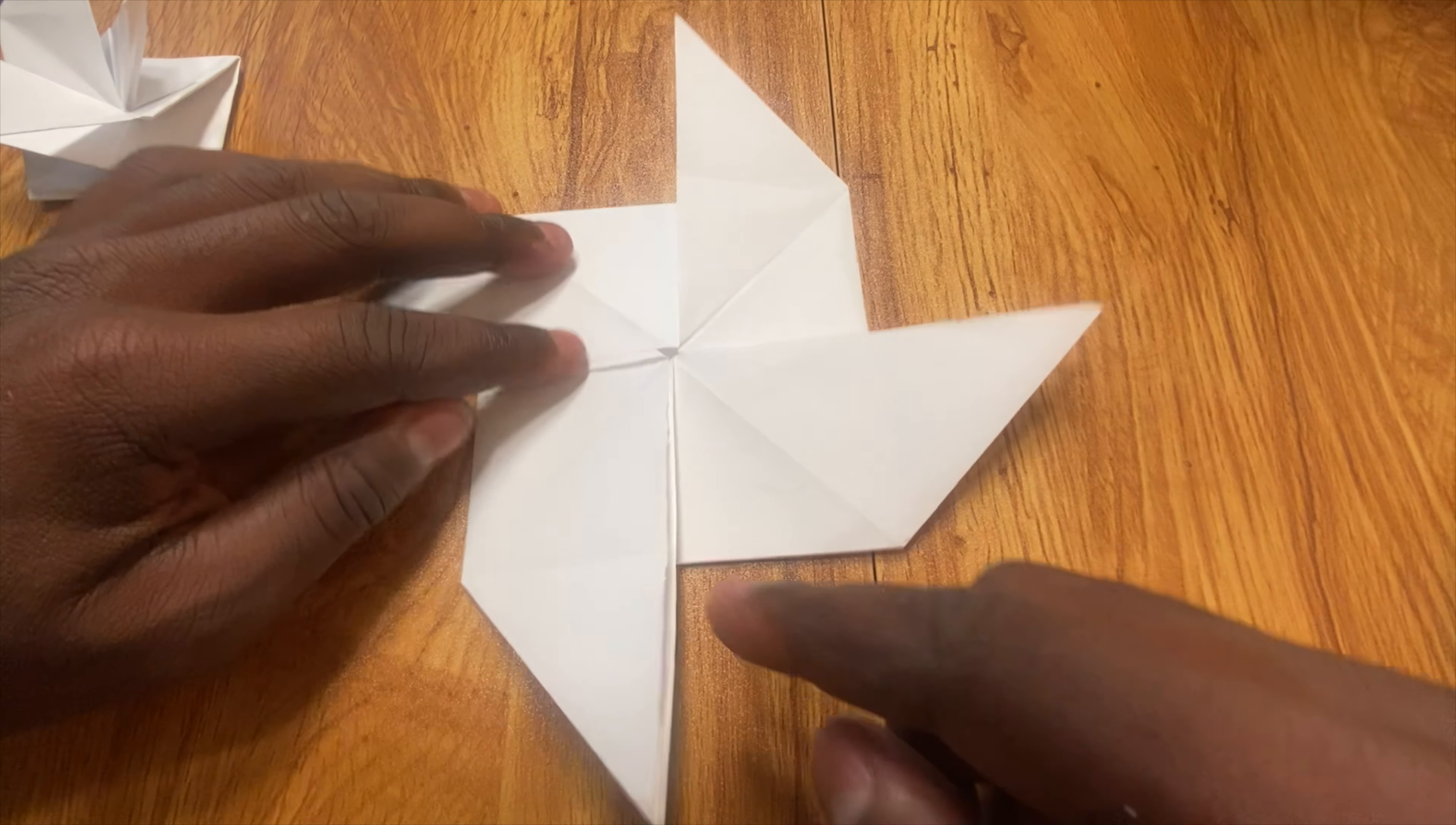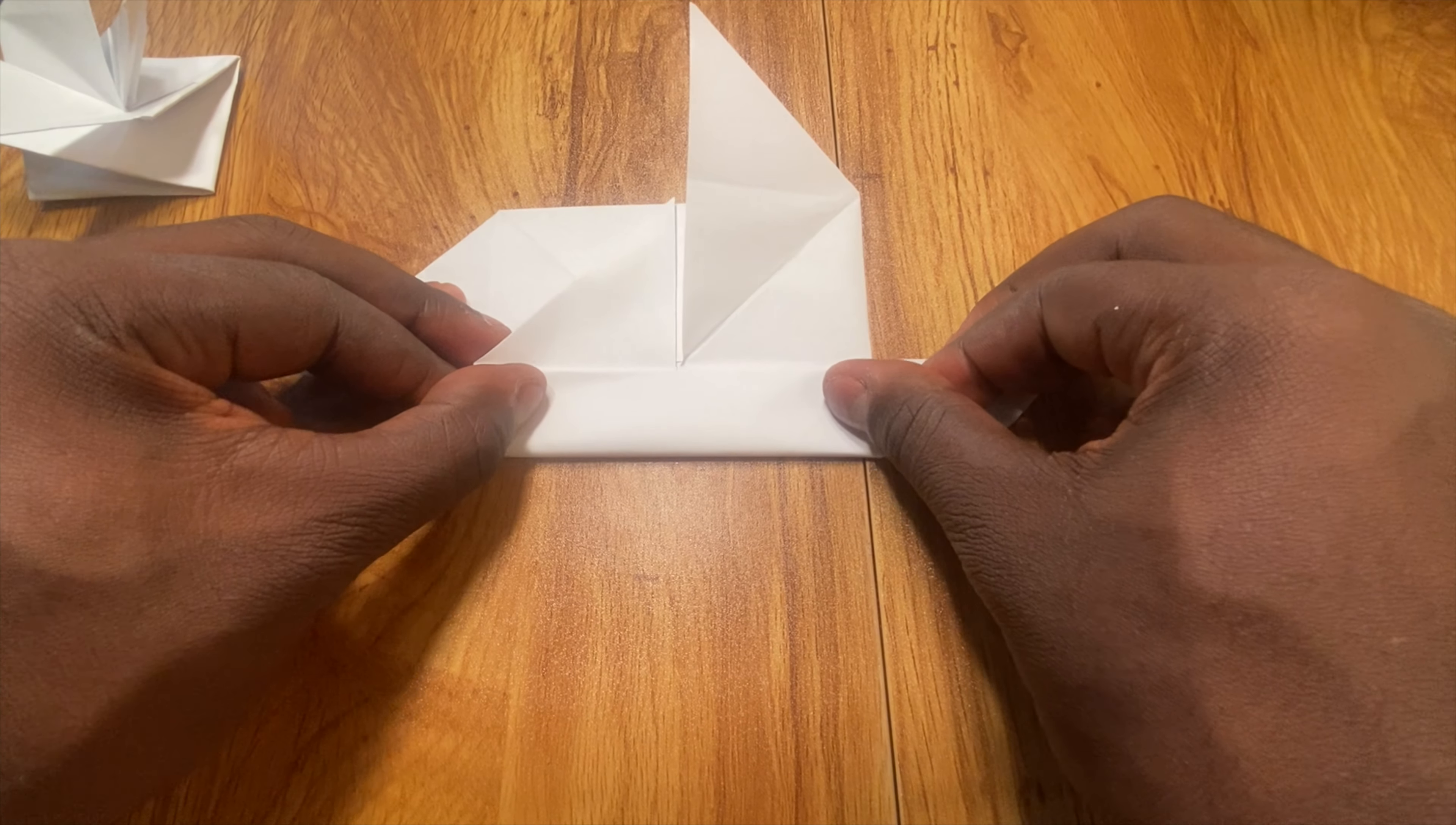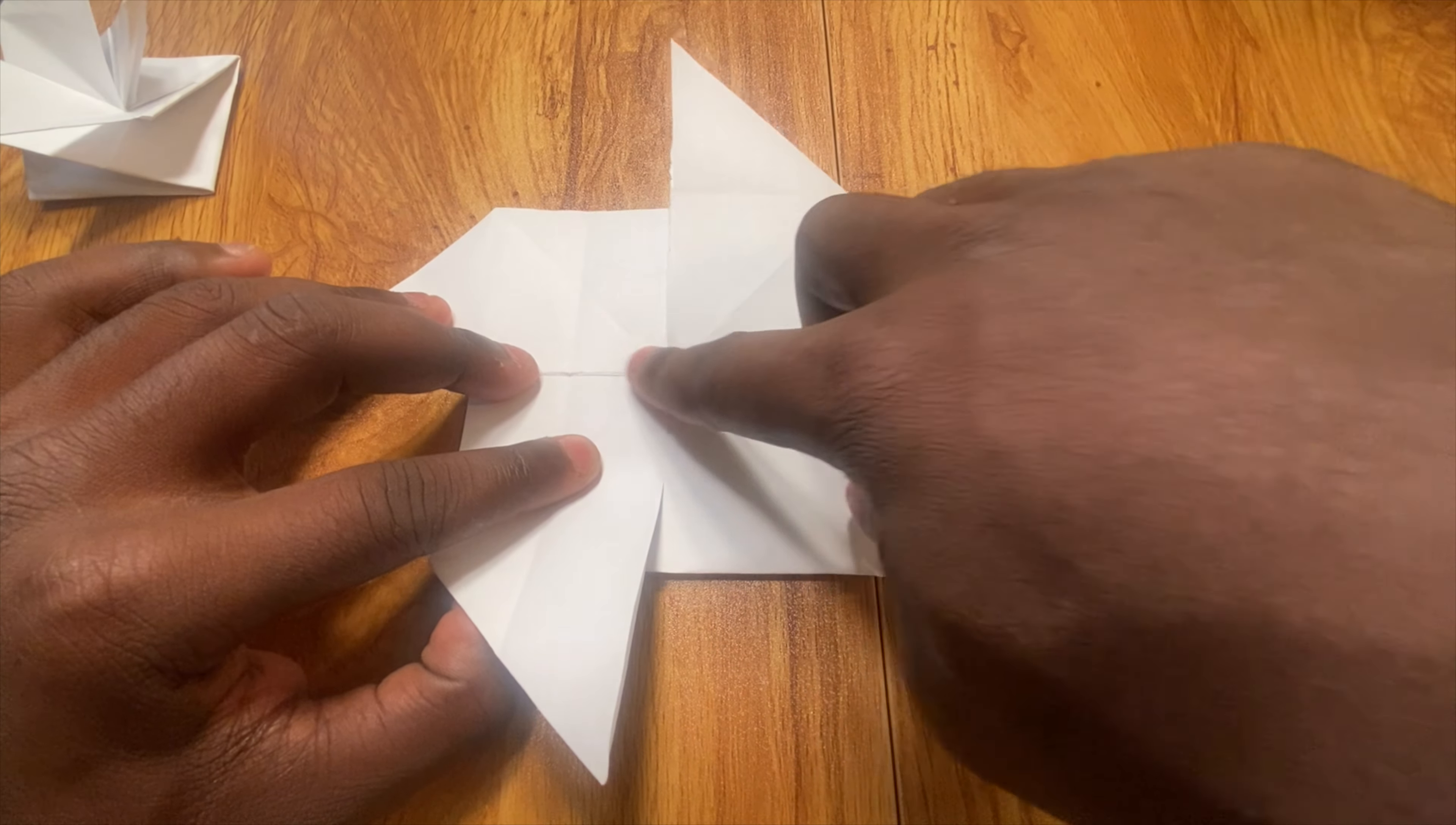The next step we're going to do is we're going to be folding this bottom edge, this whole bottom edge, to this center line. It's going to look something like this. See I'm folding this edge to the center line. Then I'm going to unfold and I'm going to rotate and repeat that process three more times, folding this bottom edge to the center line.